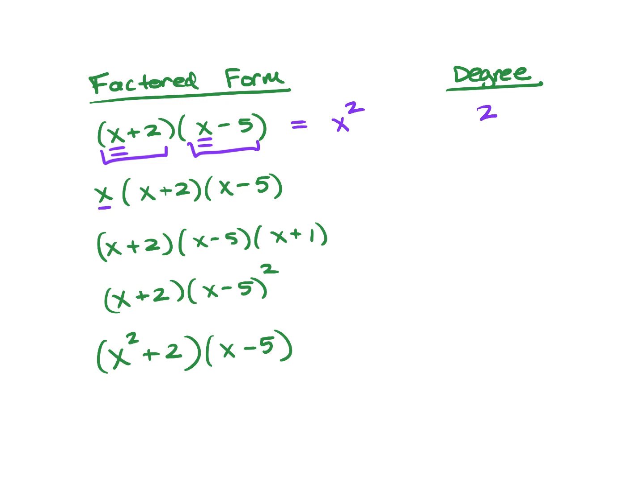In this problem, you have x times x times x, which gives us x cubed, so it's degree 3. But also notice, there are 3 factors: 1, 2, and this x is also a factor. It's kind of like an x minus 0. You can think of it that way to make it a little more simple.